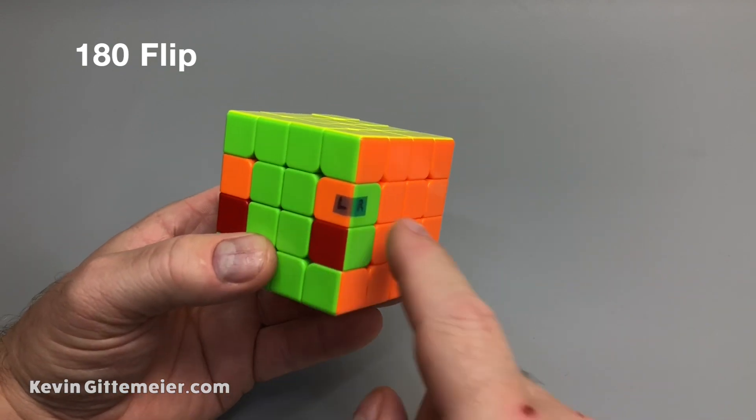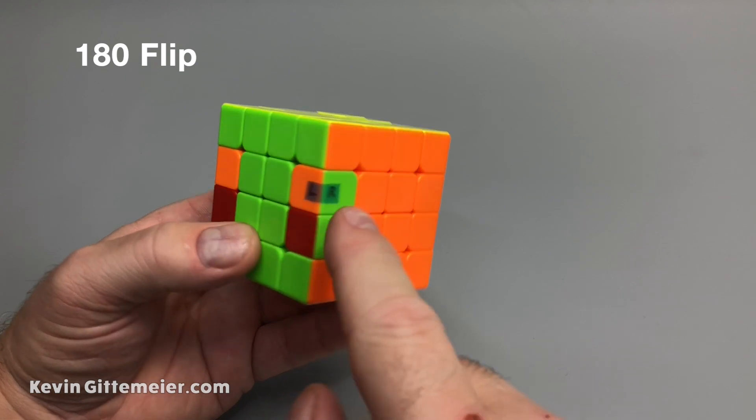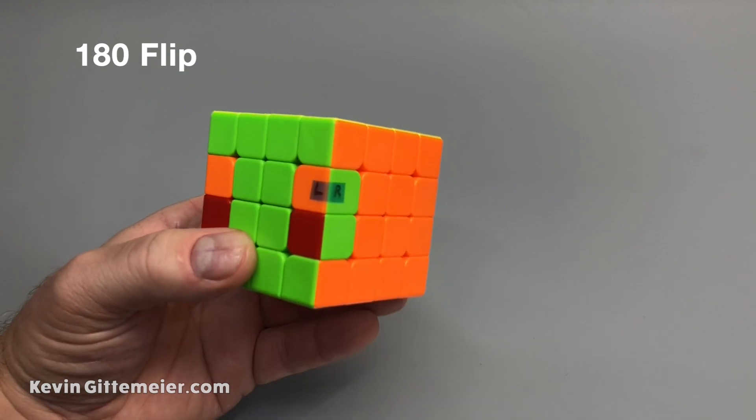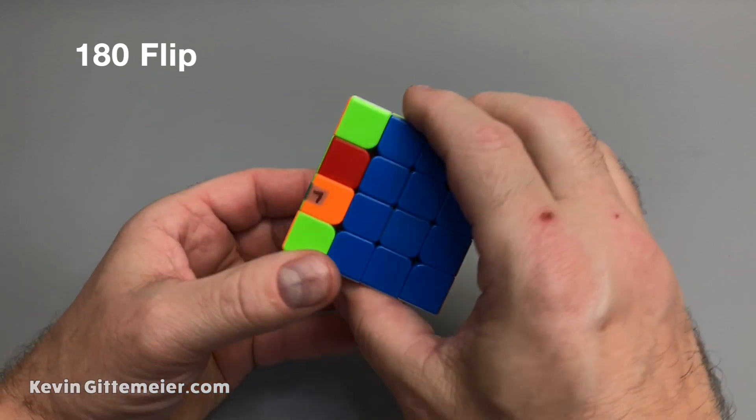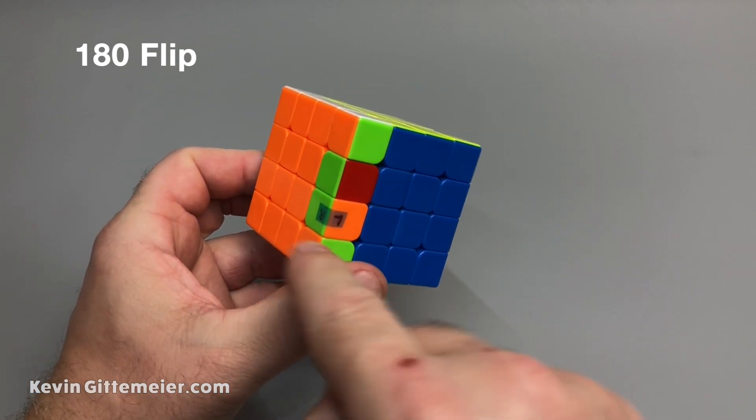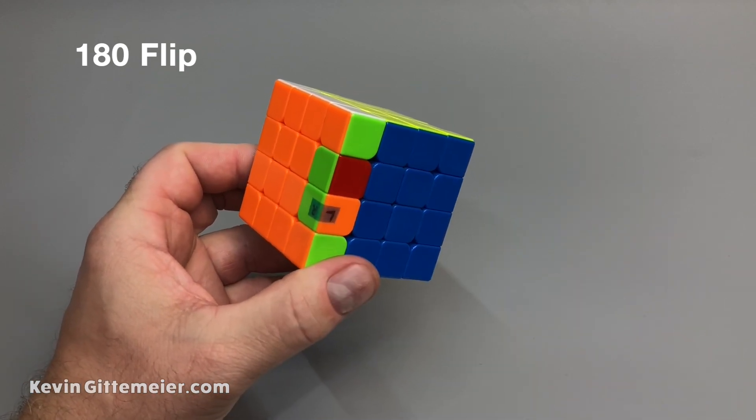So here we've got the orange green on top. I've labeled it left and right and the red green on bottom. So when we do a rotation, now the left and right have swapped and top and bottom have swapped.